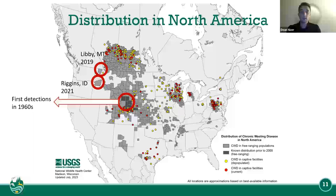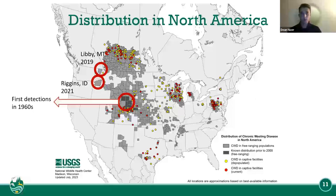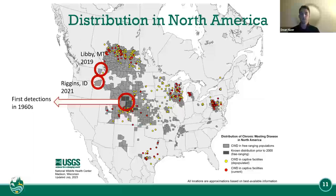CWD has spread into four provinces in Canada as well. Closest to us, it was found in Libby, Montana in 2019 — about 50 miles from our border — and in Riggins, Idaho in 2021, also very close.